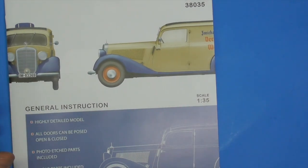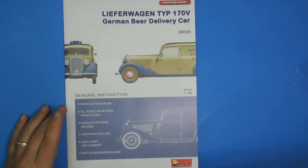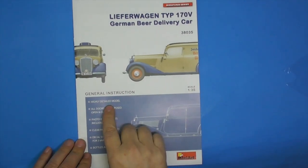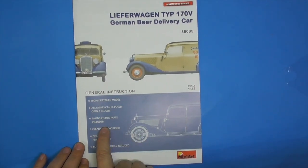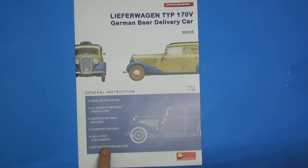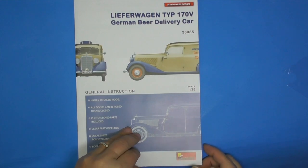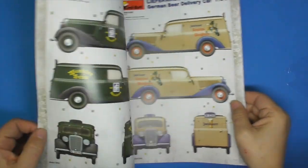And last, we have an instruction manual, which shows us highly detailed. All doors can be posed open or closed, photo etched parts, clear parts, decal for three variants, bottles and boxes included. Okay.